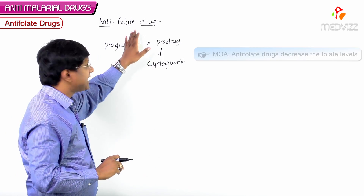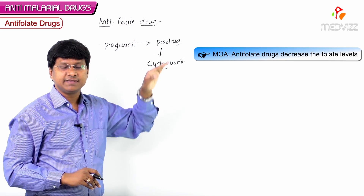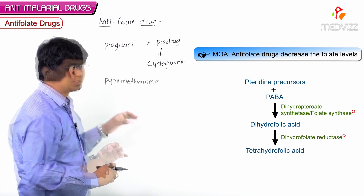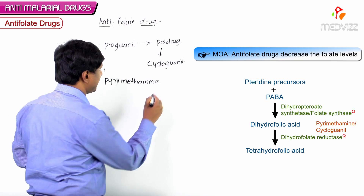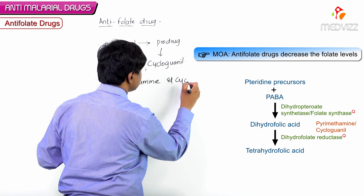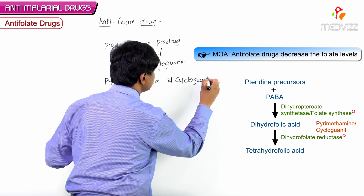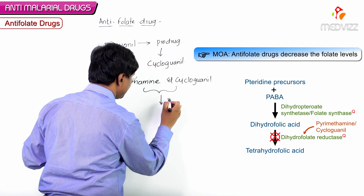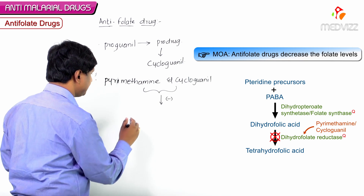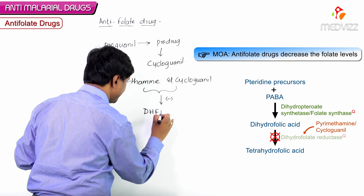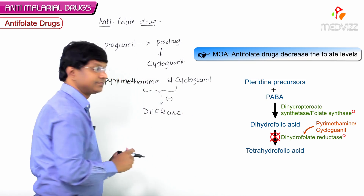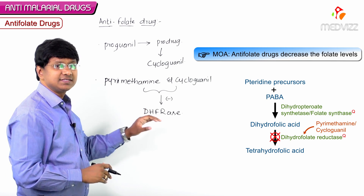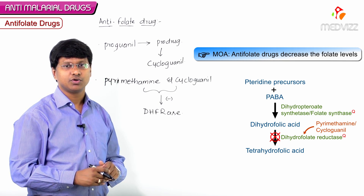These are anti-folate drugs, meaning they decrease the folate levels. Drugs like pyrimethamine and cycloguanil act by inhibiting an enzyme called dihydrofolate reductase. Once this dihydrofolate reductase enzyme is inhibited, folic acid synthesis will not occur.